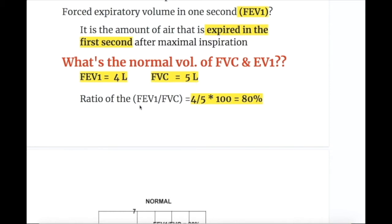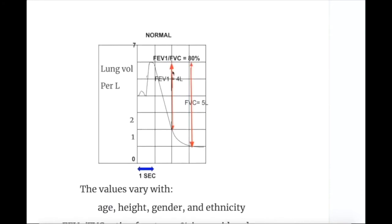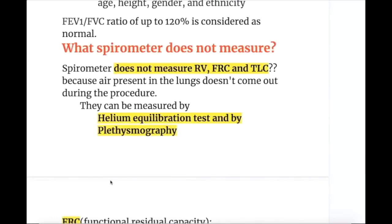The ratio FEV1 divided by FVC times 100 is 80%, so the normal value is 80% but it may range from 80 to 120%. FEV1 in one second is 4 liters and the total forced vital capacity — total amount of air expired — is 5 liters. So 4 upon 5 into 100 is 80%.